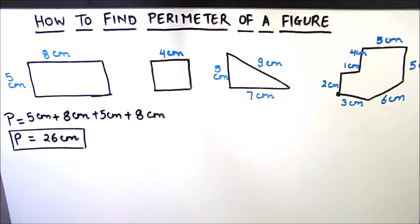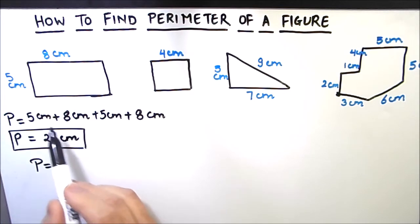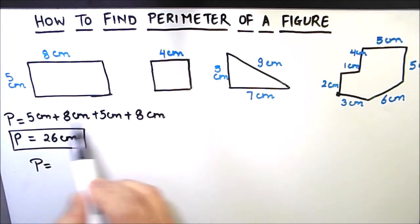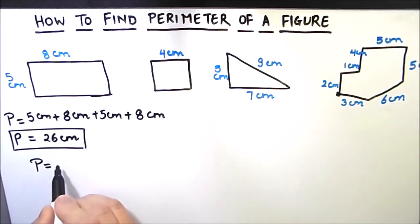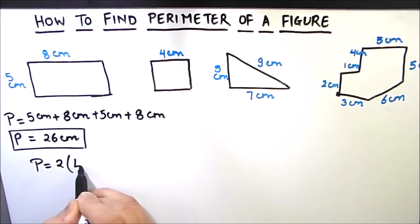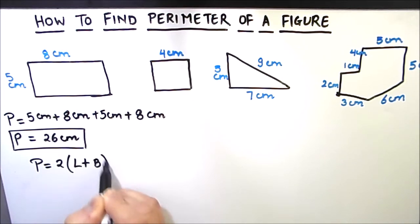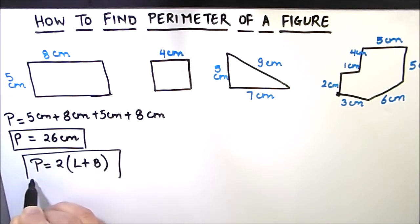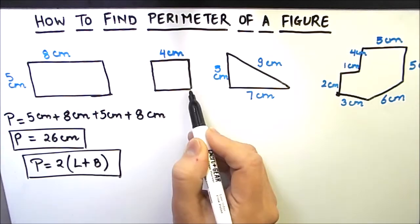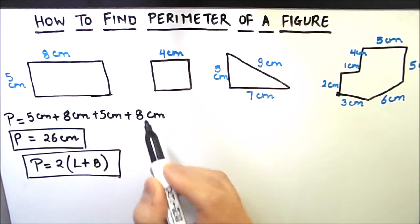The unit of perimeter is the same as the unit of length we are using, so here it is centimeters. We have taken 2 times the length and 2 times the breadth, so the formula for the perimeter of a rectangle is 2 times (length plus breadth).